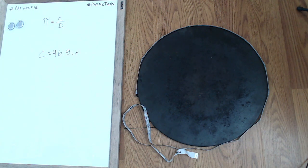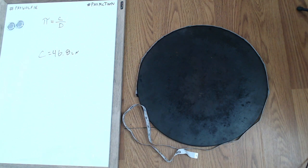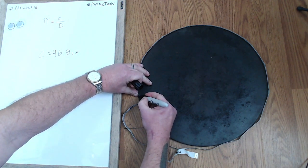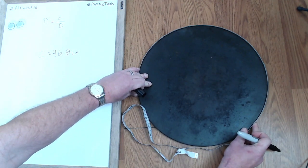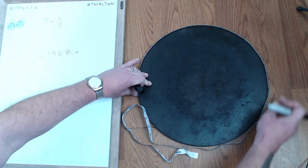It's a little tricky to figure out exactly where the diameter is. The way I'm going to do that is — I know I've got 46.8 inches in circumference, so the diameter goes from one side to the exact halfway point to the other side. I'll make a little tick mark here where I start, and then find that halfway point at 23.4 inches to the other side.